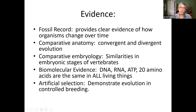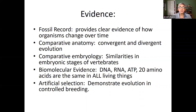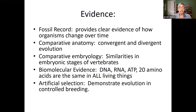Comparative anatomy involves convergent and divergent evolution — to converge means to come together, to diverge means to split apart. Comparative embryology shows us similarities in the embryonic stages of vertebrates. Biomolecular evidence tells us that all living things use DNA, RNA, ATP, and the same 20 amino acids — you can't deny that all living things are at least related on a biomolecular level. Artificial selection can demonstrate evolution in controlled breeding — 8,000 years of human artificial selection has created everything from a St. Bernard to a chihuahua from a wolf.